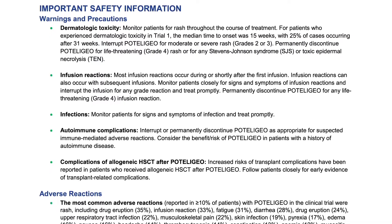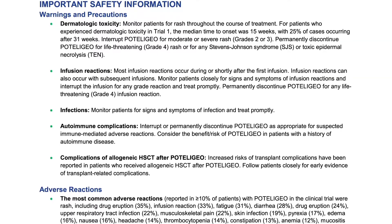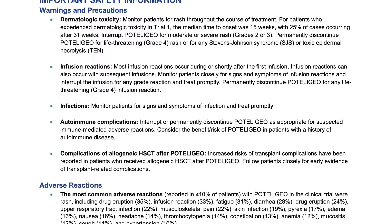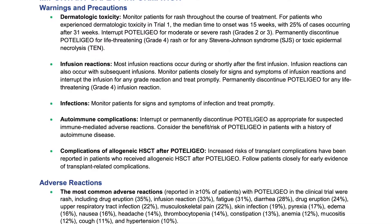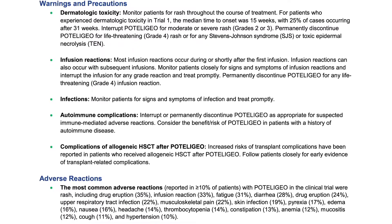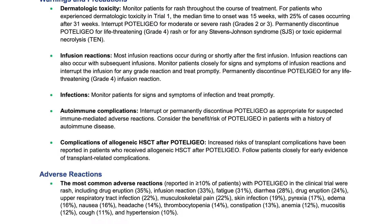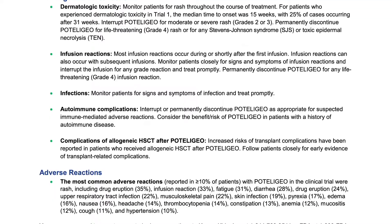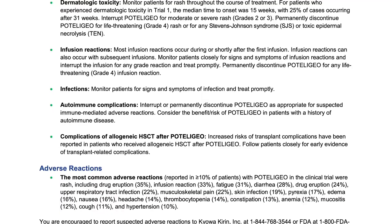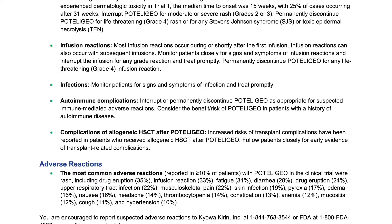Infections: Monitor patients for signs and symptoms of infection and treat promptly. Autoimmune complications: Interrupt or permanently discontinue mogamulizumab as appropriate for suspected immune-mediated adverse reactions. Consider the benefit-risk of mogamulizumab in patients with a history of autoimmune disease. Complications of allogeneic HSCT after mogamulizumab: Increased risk of transplant complications have been reported in patients who received allogeneic HSCT after mogamulizumab. Follow patients closely for early evidence of transplant-related complications.